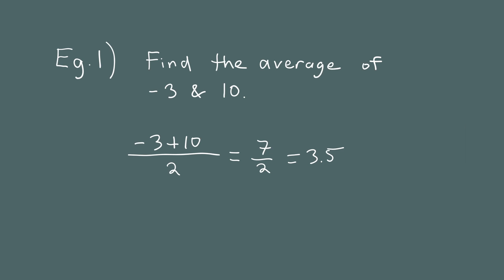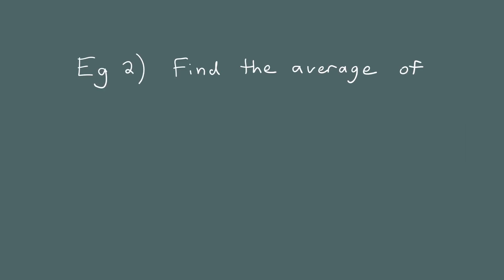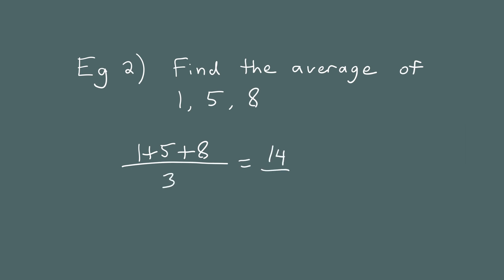You can find the average of more than two numbers. For example, let's find the average of 1, 5, and 8. This time there's three numbers, so we add them together and divide by 3. That gives us 1 plus 5 plus 8 divided by 3, or 14 thirds. And if you want, you can write it as 4 and 2 thirds, or 4 and 6 repeating. These are just different ways to write the same number.